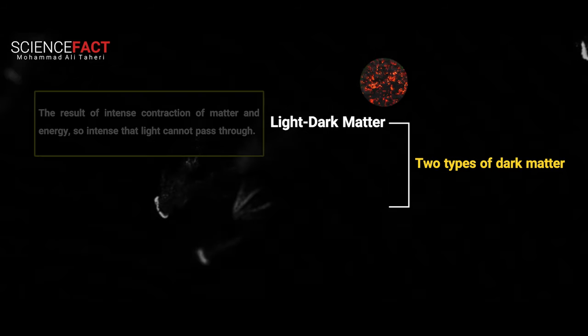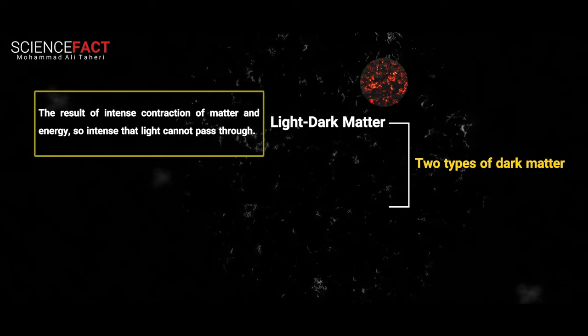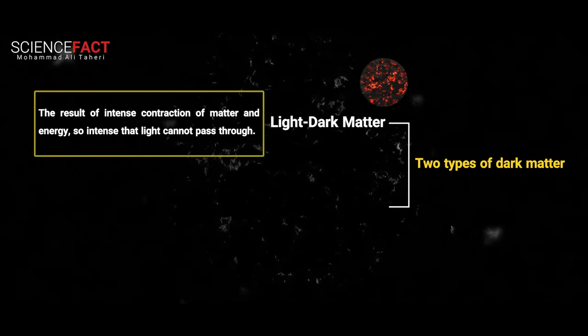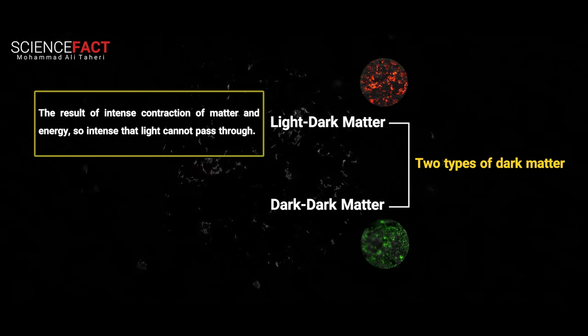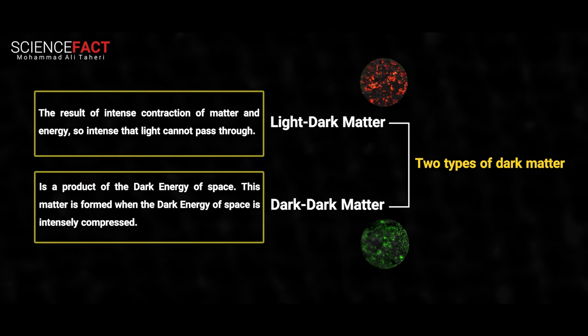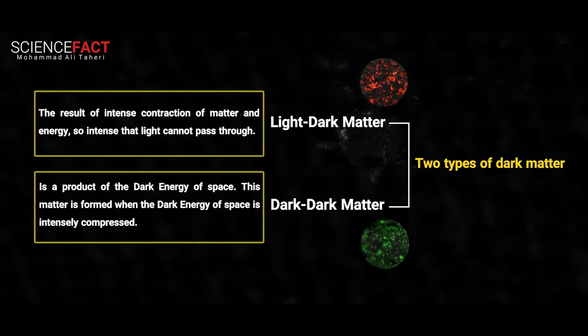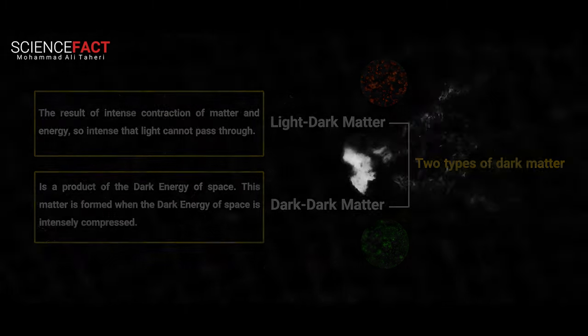1. Light dark matter, the result of intense contraction of matter and energy, so intense that light cannot pass through. 2. Dark dark matter is a product of the dark energy of space. This matter is formed when the dark energy of space is intensely compressed. The matter formed in the gravitational center maintains visible frequencies for only a short period of time, before it goes dark and becomes invisible.